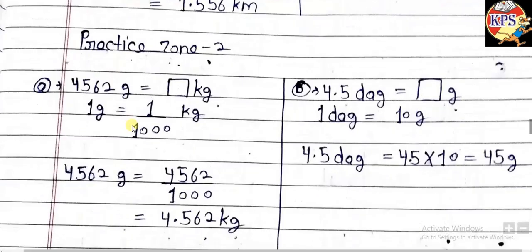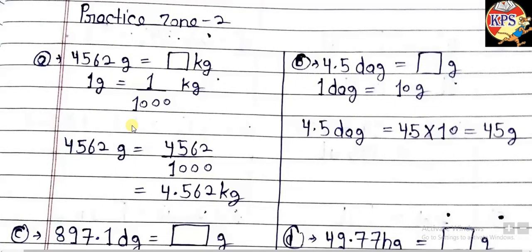In practice zone 2, after I explain you have to write these questions in a copy. Question A says you have to convert grams into kilograms. The method of conversion is the same across all metric units. So just like meters to kilometers, 1 gram equals 1 upon 1000 kilogram. Therefore, 4562 grams equals 4562 upon 1000. Because three zeros are given, we place the decimal point before three numbers.